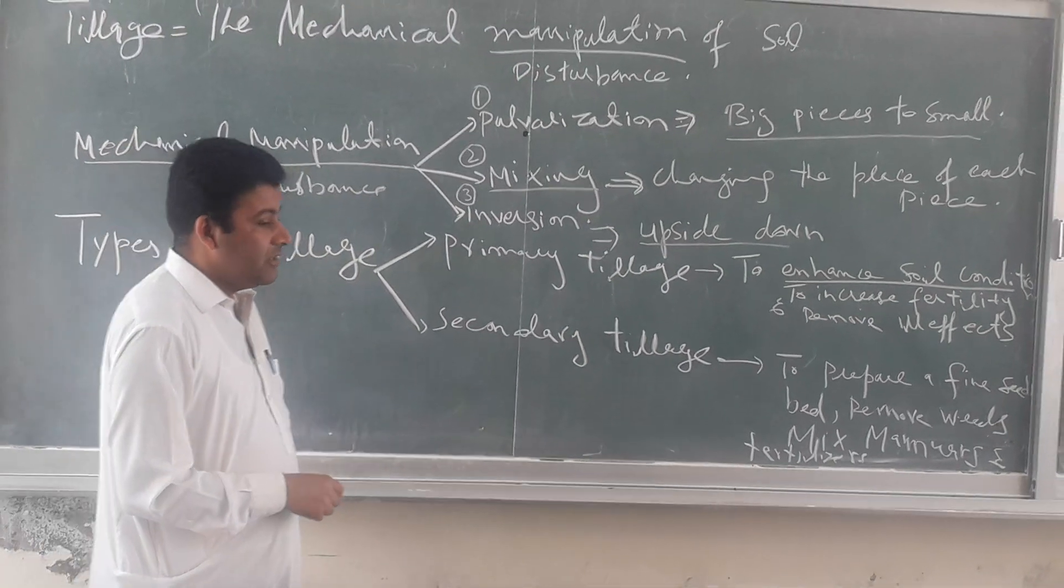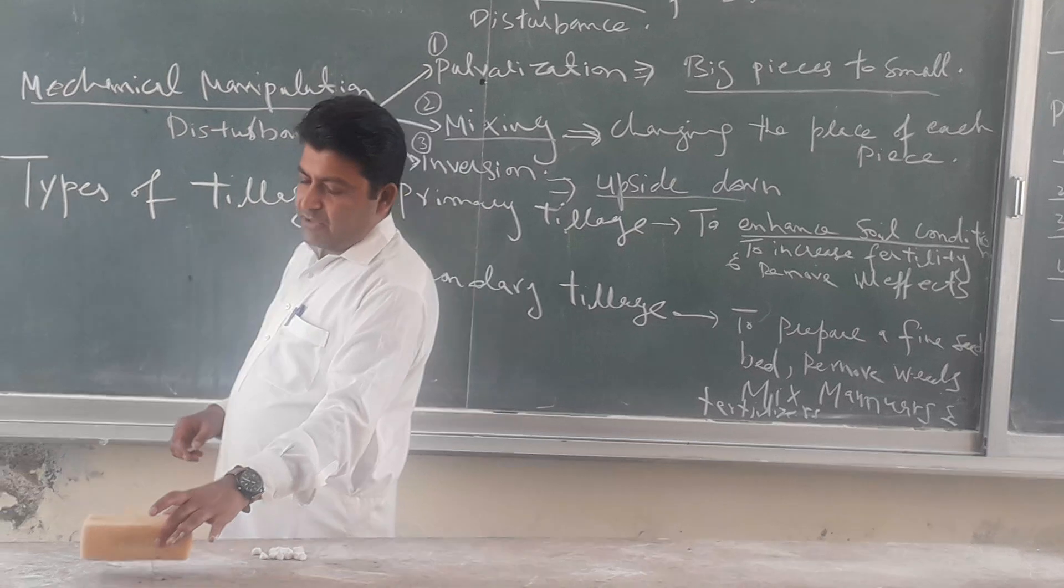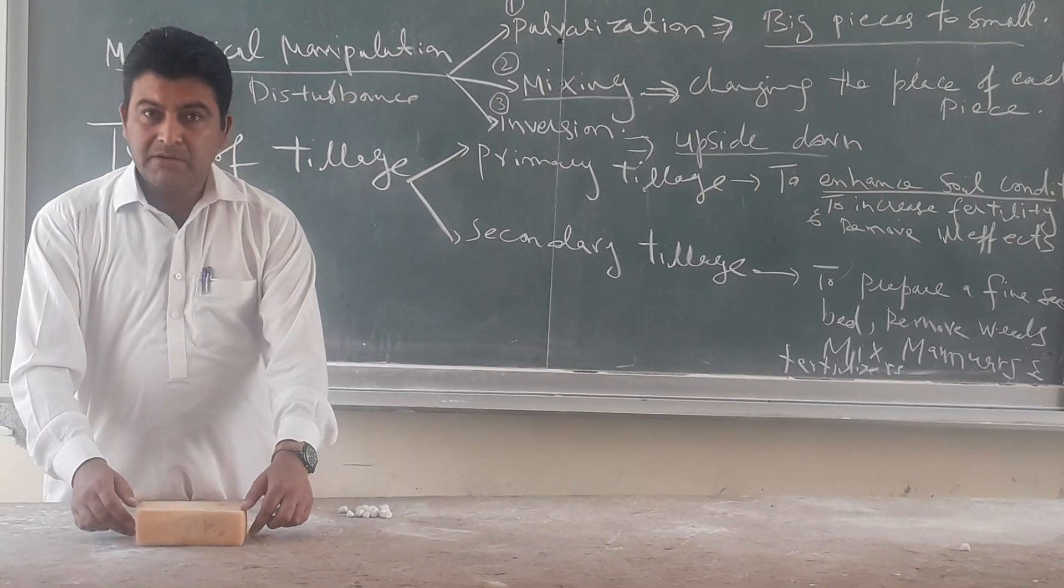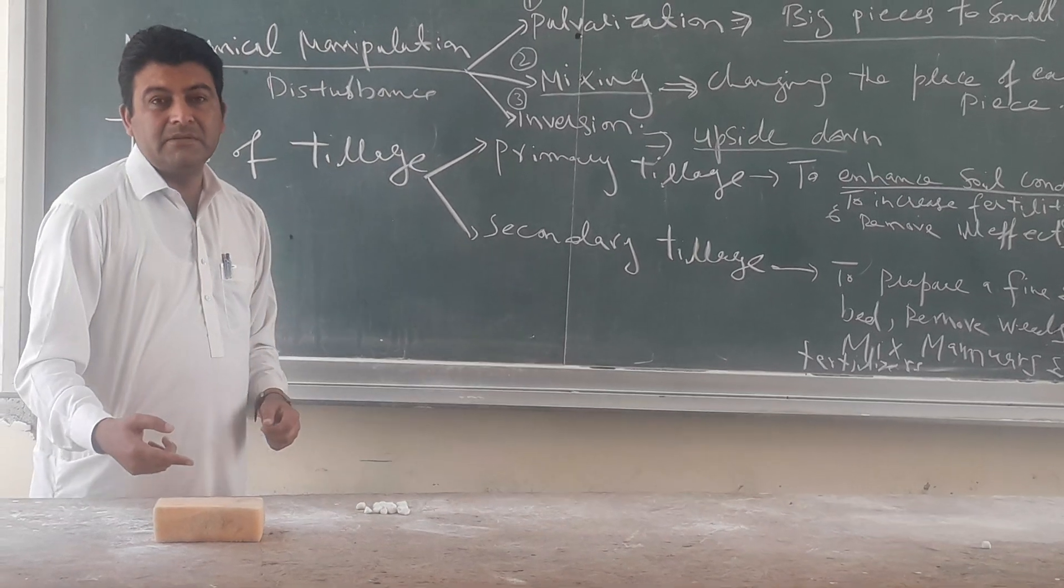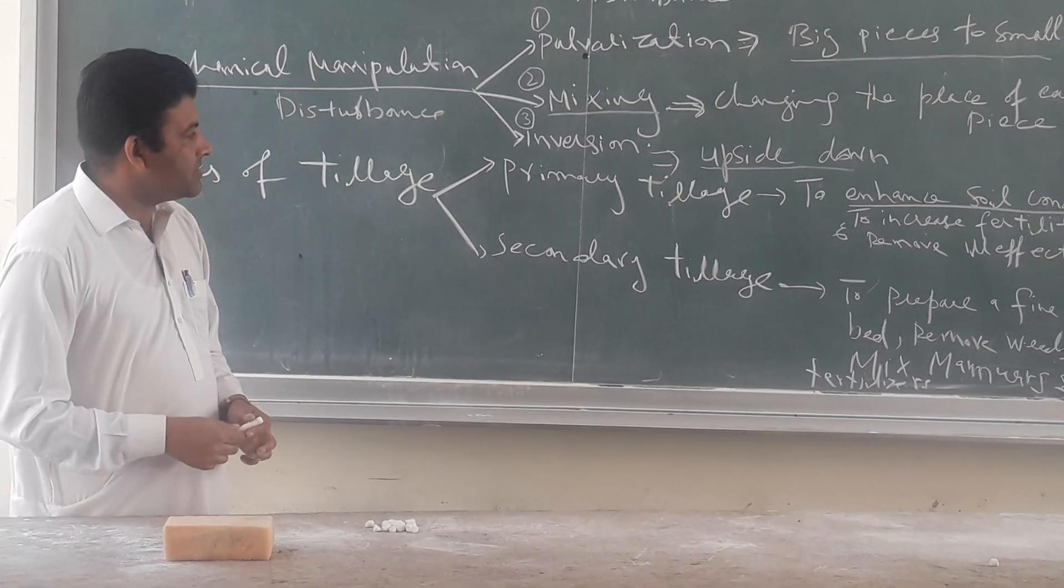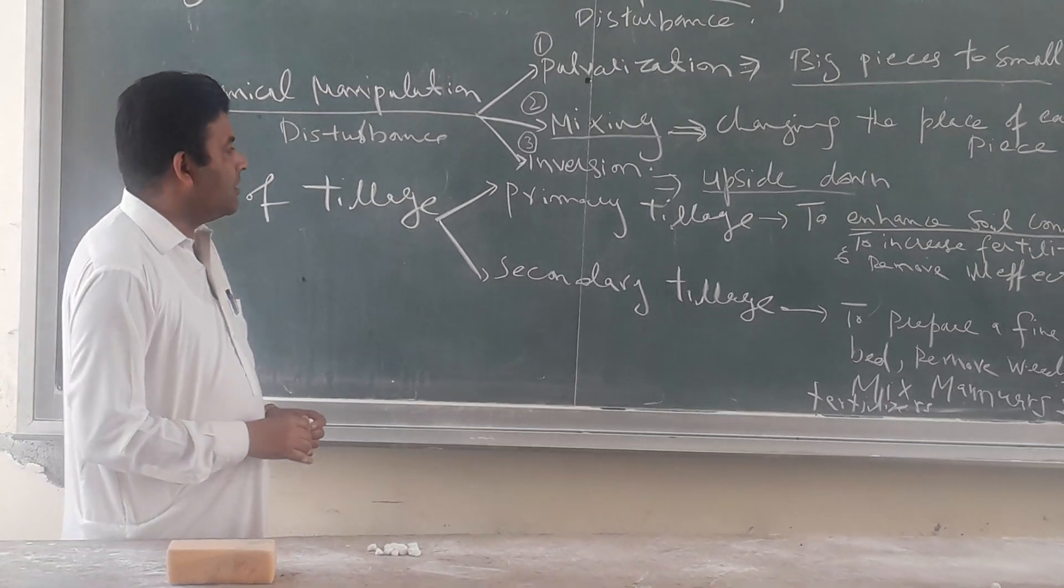And another thing is inversion. So what is the meaning of inversion? For example, this is a piece of soil. So inversion means to completely invert it. So here it is going upside down here. So this is called inversion of a piece.